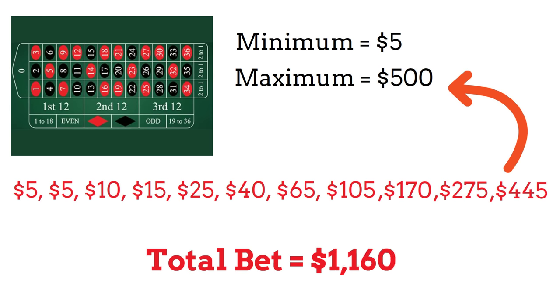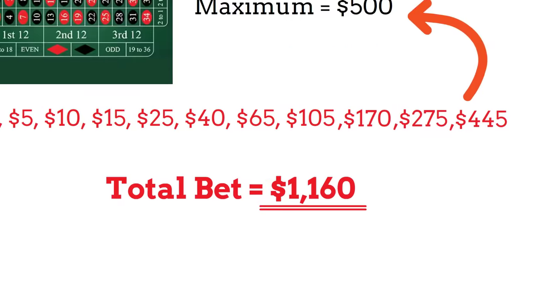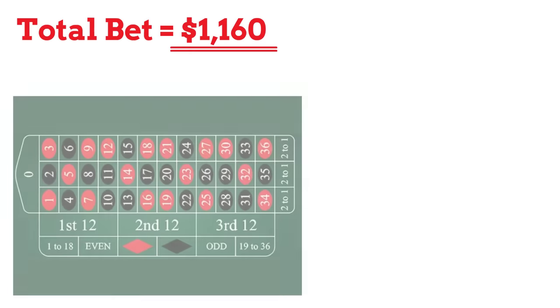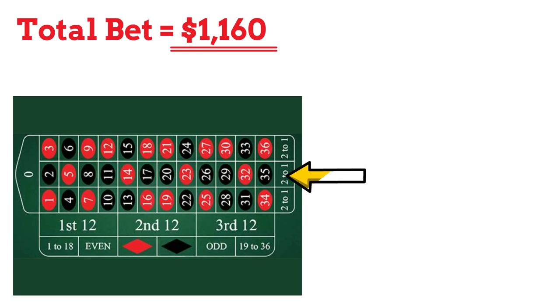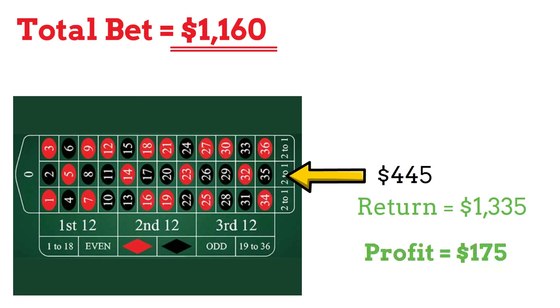If we add all these together, this is a total amount bet of $1,160. So if you want to make sure you can follow this sequence all the way to the end should you find yourself on a losing streak, you're going to need $1,160 to do it. Let's quickly make sure our final bet still brings home a profit after betting $1,160. $445 with a payout of 2 to 1 returns a total of $1,335, making our total profit $175 should we get this far along in the sequence.